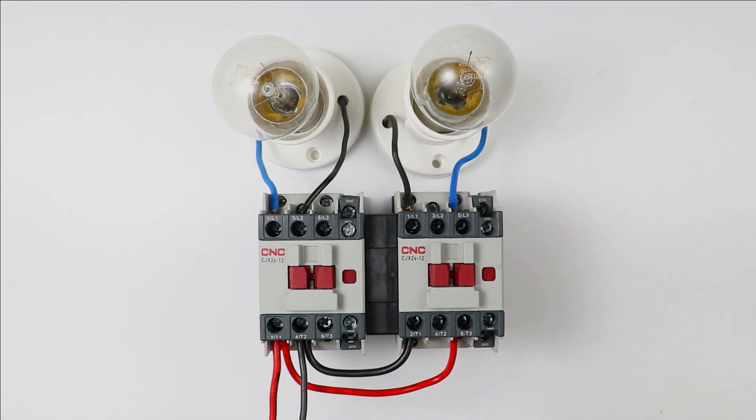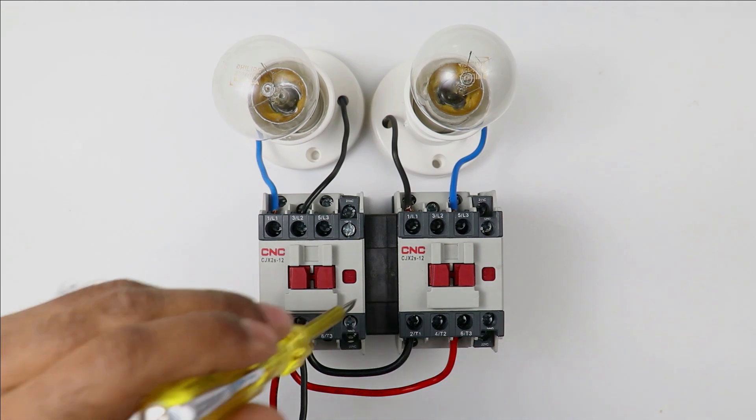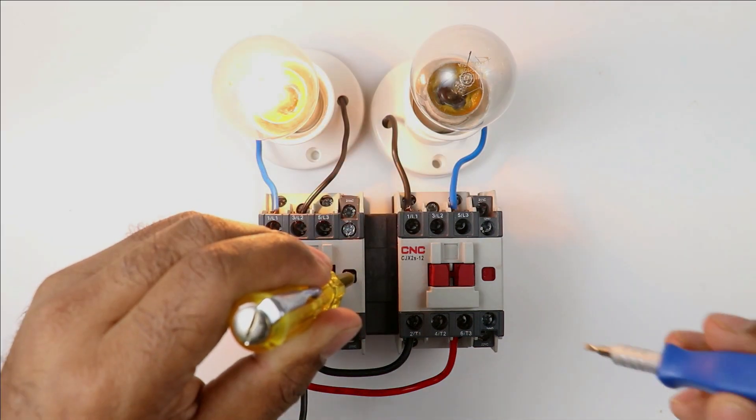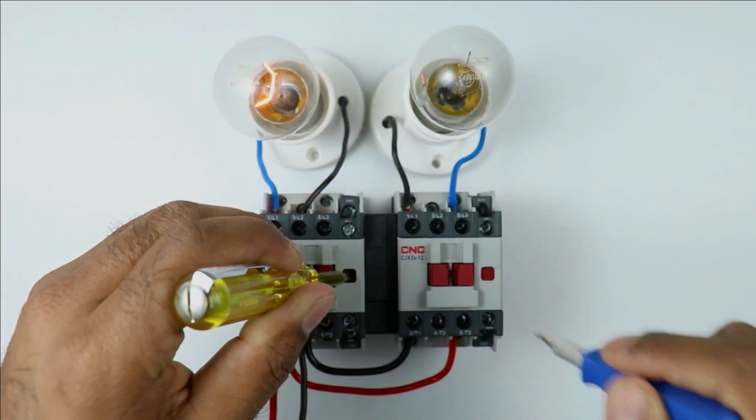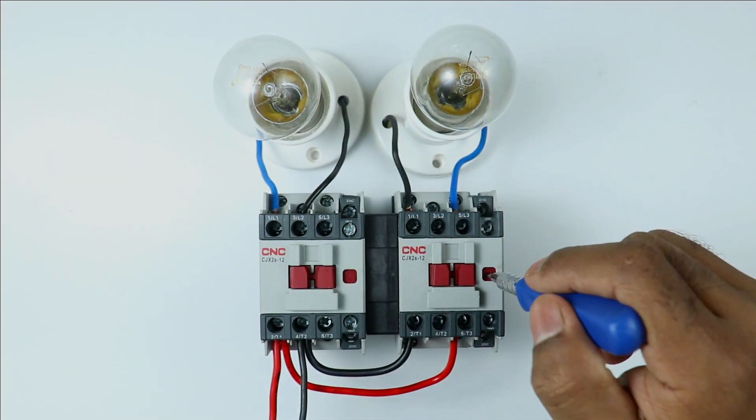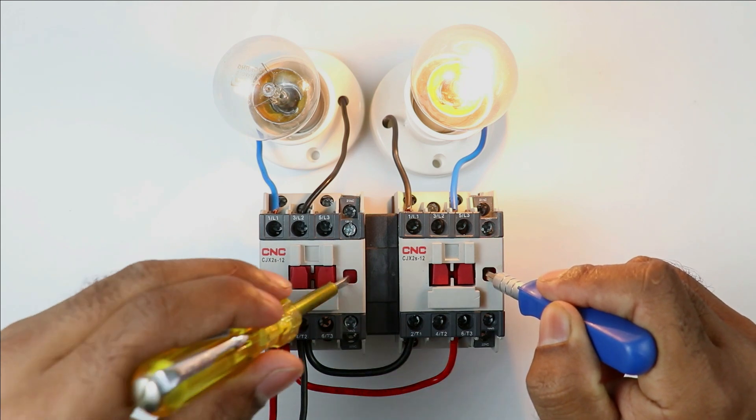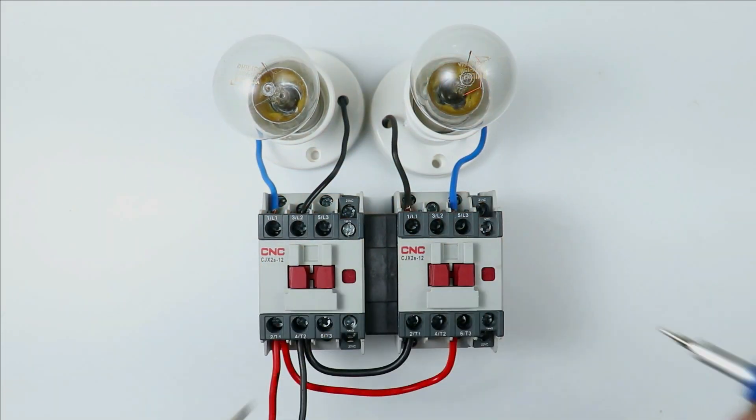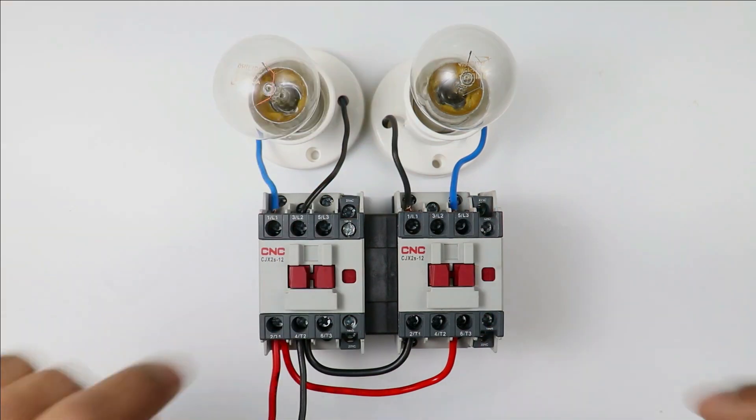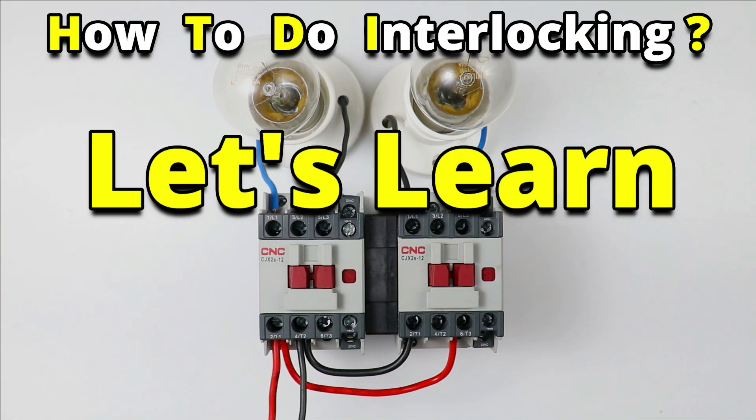Today in this video, we are going to learn how two contactors get mechanically interlocked. Like if I turn on this contactor and after this, if I try to turn on the other contactor, then it won't get turned on. Or if I turn on this contactor and try to turn on the other one, then it also won't get turned on. So you can say that these contactors are interlocked. How interlocking can be done, let's understand.